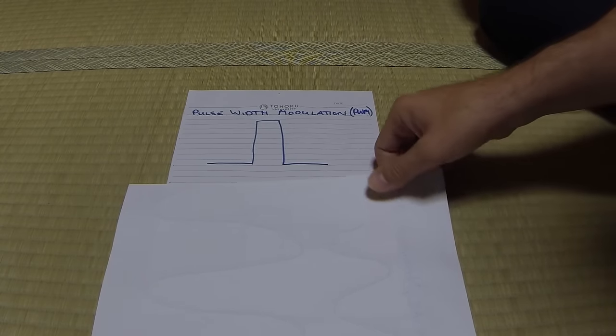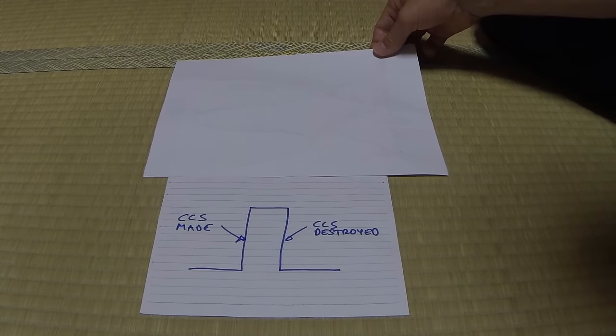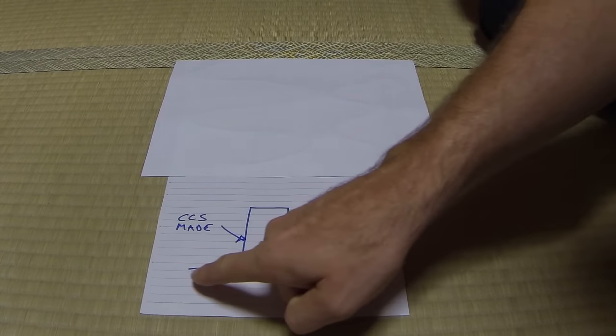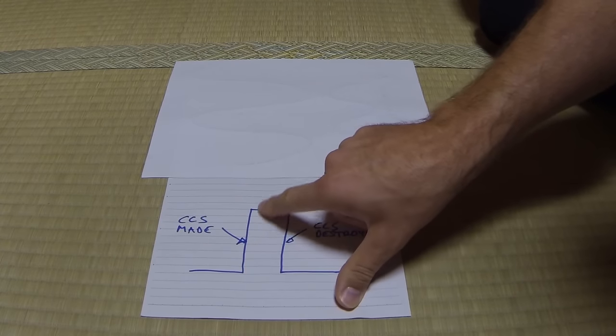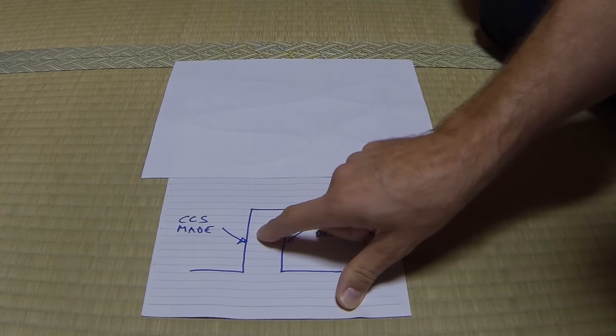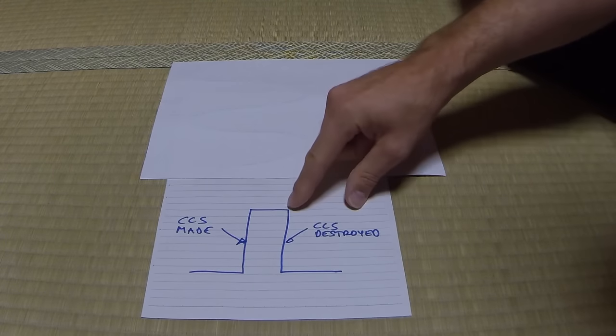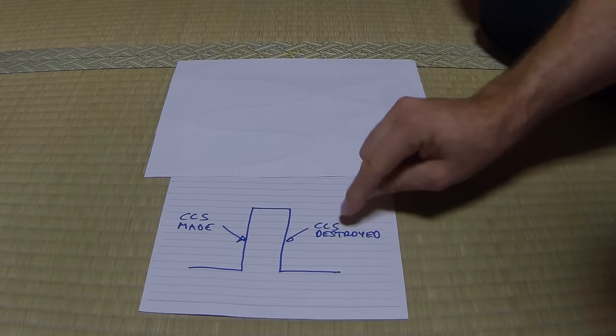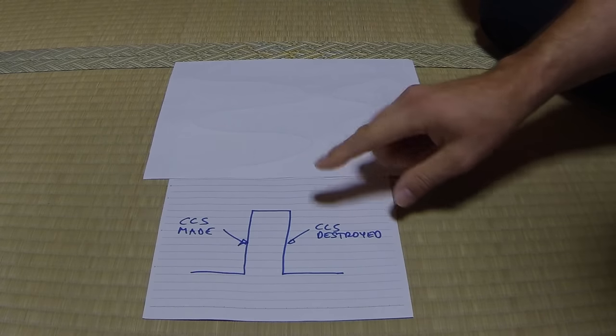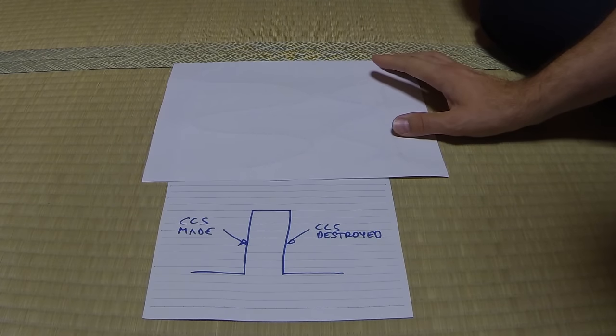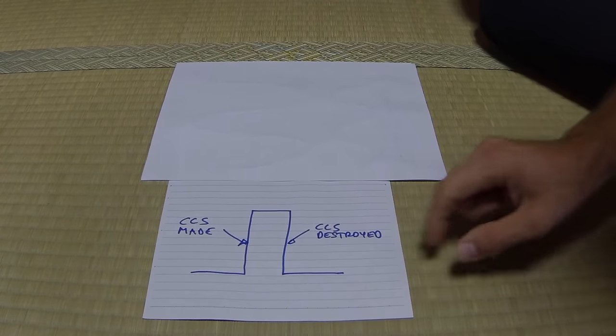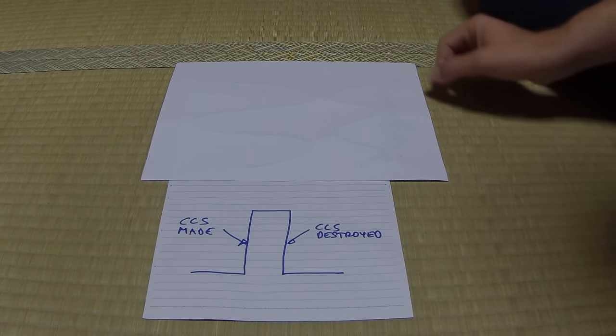However, Vladimir says that basically this will not work, and the reason is that when you have this high DI-DT, this is good, this makes our coherent correlated state. However, when you come down the other side of the waveform, it destroys them. So effectively, you're not able to see your excess heat effect because it's making and destroying the coherent correlated states, according to his understanding.